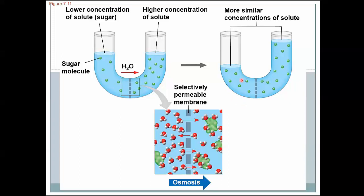And eventually you have more similar concentrations of solute on both sides of the membrane. How does that happen? Well you have more water over here now. So the water to sugar ratio is about the same over here now as it is over here because water has crossed that membrane. That is the process of osmosis. The diffusion of water across a selectively permeable membrane.